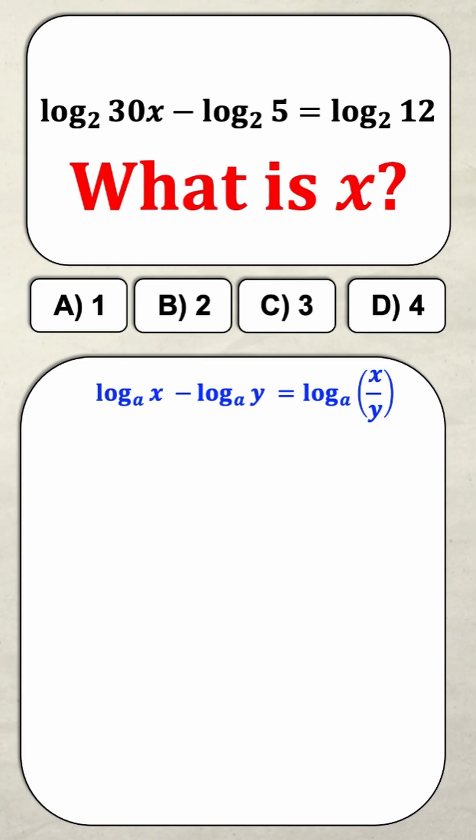And so that means that I can simplify the left hand side to just be log base 2 of 30x over 5. And that's going to be equal to the right hand side, which is log base 2 of 12.